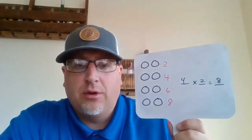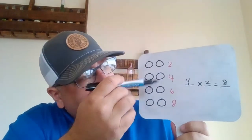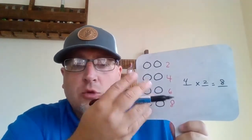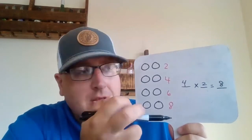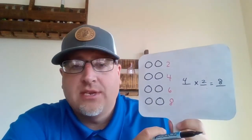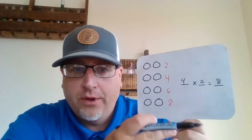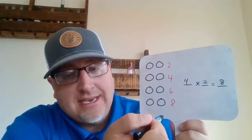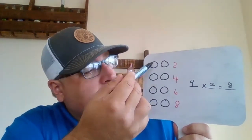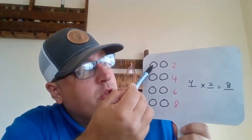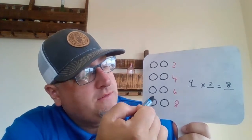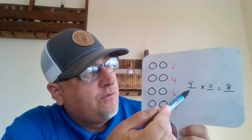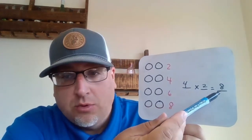See how we worked that together? We had just a picture and we took what we had in that array. We looked at the rows, we looked at the columns, and we were able to put a number sentence together. Pretty cool. We skip counted — two, four, six, eight. We looked at our rows: one, two, three, four. We looked at our columns: one, two. And then we plugged it all in — four times two equals eight.